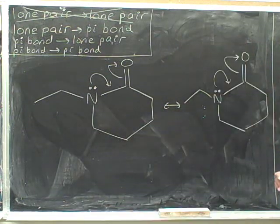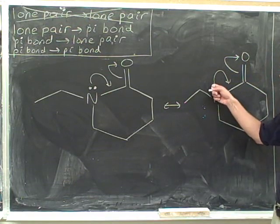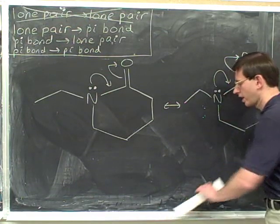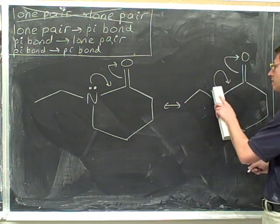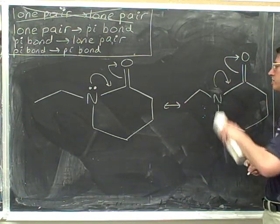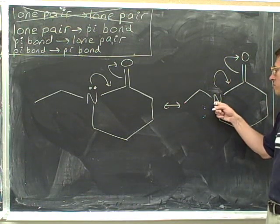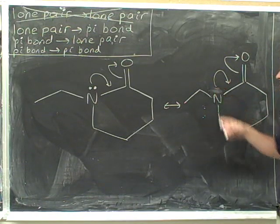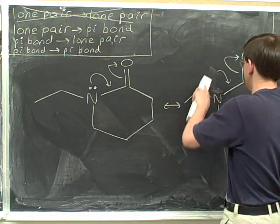As usual, we've redrawn our picture, including the arrows. We go to the initial tail — this initial tail is coming from the lone pair, so we have to erase that lone pair. Because we're at the initial tail, we have to deal with the charge. This atom started neutral and it's losing electrons, so it becomes positive. And we can erase that tail.